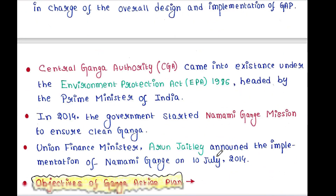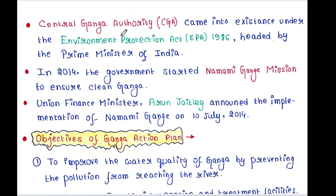The Central Ganga Authority, or CGA, came into existence under the Environment Protection Act, EPA 1986, headed by the Prime Minister of India. In 2014, the government started the Namami Ganga mission to ensure a clean Ganga. Union Finance Minister Arun Jaitley announced the implementation of Namami Ganga on 10th July 2014.